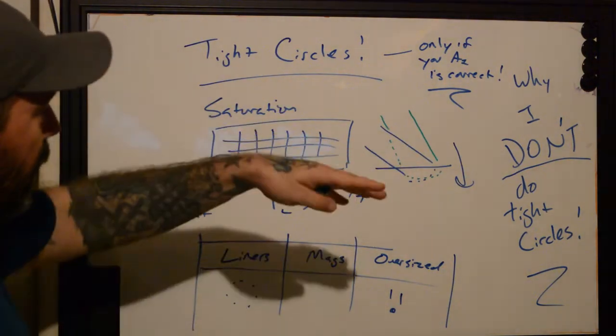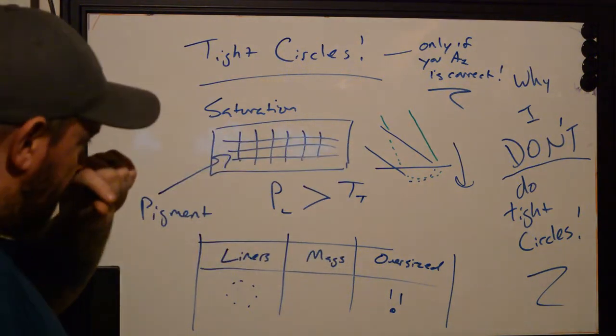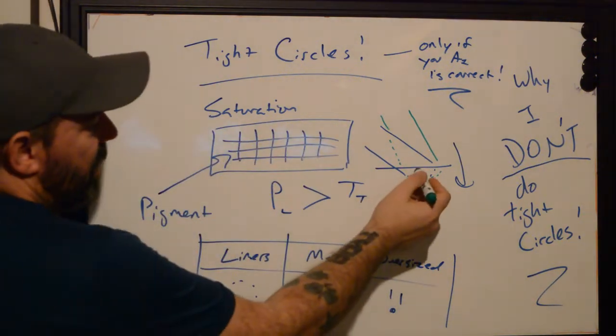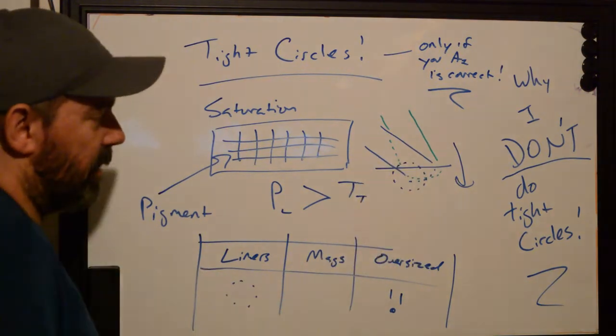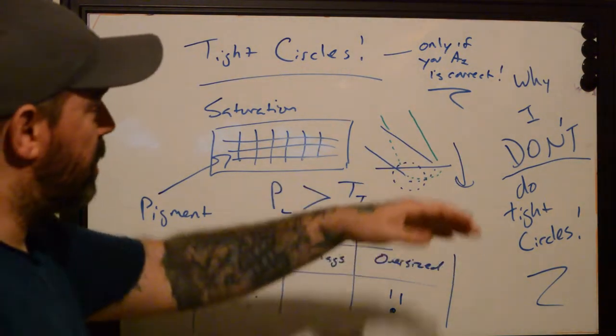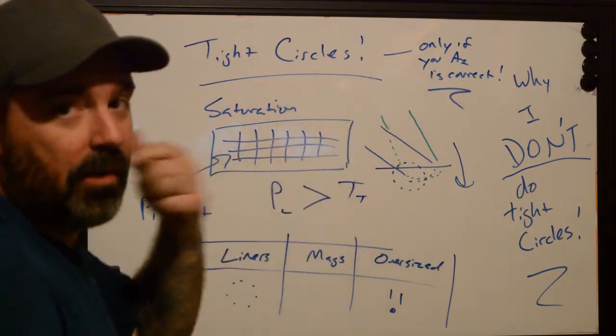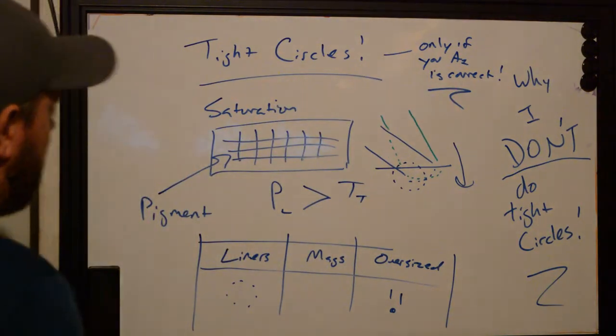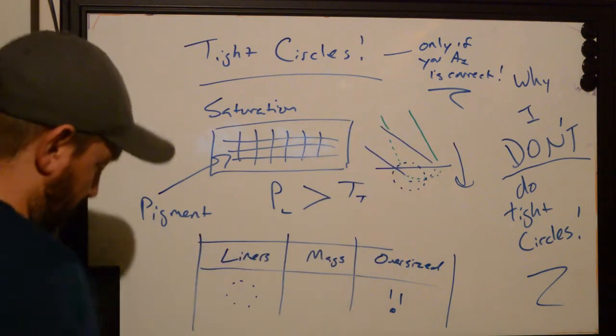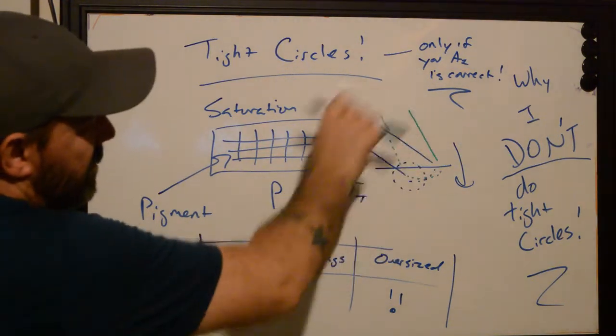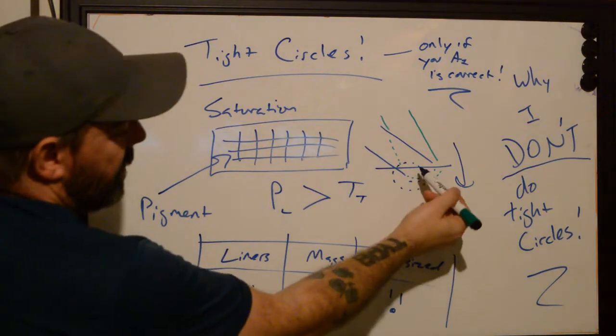But if you tip your needle back and you start holding a little bit more closely to being parallel with the skin what happens is you're only using part of the actual needle that's going to be getting to the level that you want. The other side is just going to be breaking the skin open, kind of making it a little bit more raw. It's almost like using two passes.